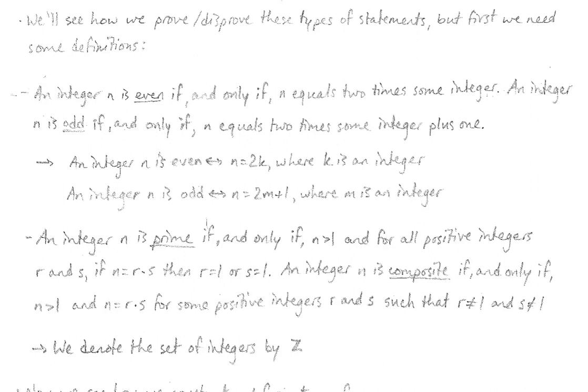Integers, or whole numbers, as you know, are either even or odd. So let's give a more mathematical definition to these words, even and odd. An integer n is even, if and only if, n is equal to 2 times some whole number. An integer n is odd, if and only if, n is equal to 2 times some whole number and then plus 1 added on at the end.